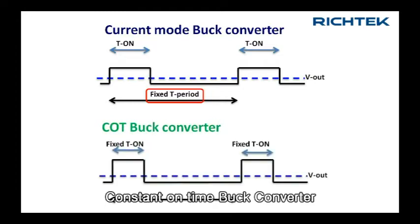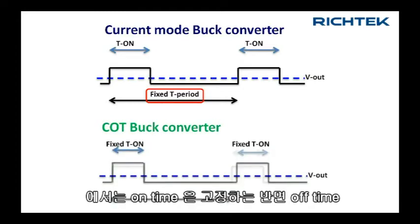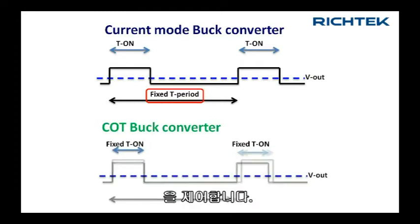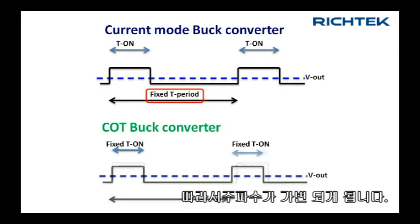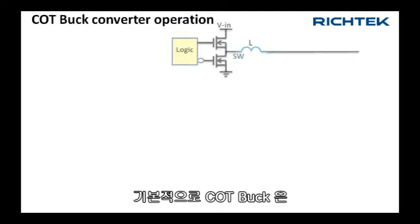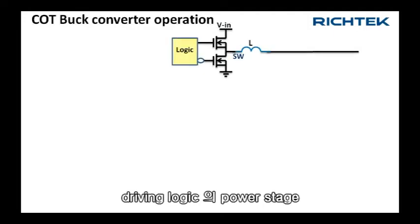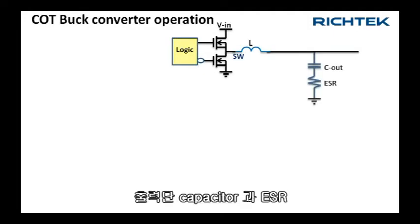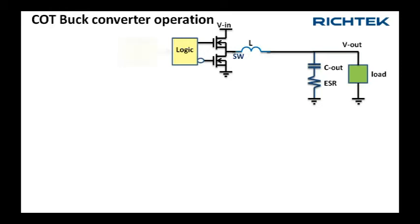Constant on-time buck converters control the off-time while keeping the on-time fixed. This means that the frequency is variable. The basic COT buck consists of a power stage with driving logic, an output capacitor with some ESR, and the load.